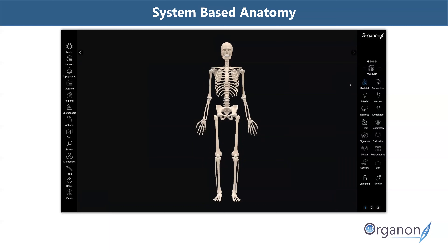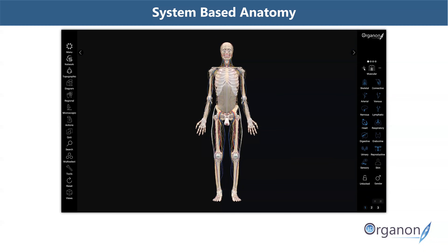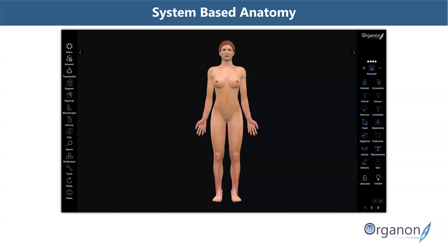The system-based anatomy approach in 3D Organon is designed to provide learners with the big picture of a single body system. On the right side panel, you can add and subtract whole body systems in your scene view with a single click. Here we're adding the heart, respiratory, digestive, endocrine and sensory systems. Muscles can also be exposed in layers from deep to superficial and vice versa, simply by adding or subtracting layers, and we can add the skin and change the gender.